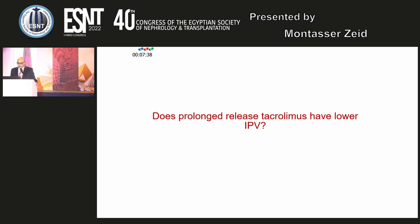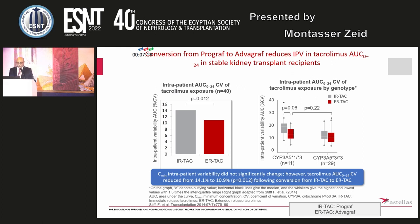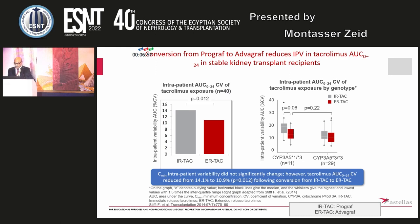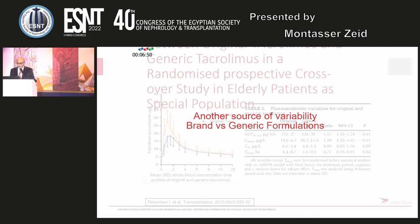Does prolonged-release tacrolimus have lower intrapatient variability? Conversion from Prograf to Advagraf reduces intrapatient variability in tacrolimus area under the curve in stable kidney transplant recipients. The intrapatient AUC coefficient of variation for immediate-release tacrolimus (Prograf) is about 14%, while for extended-release tacrolimus (Advagraf) it is about 10%. By genotype, variability is higher in non-expressors than in expressors. Another source of variability is branded versus generic formulations.